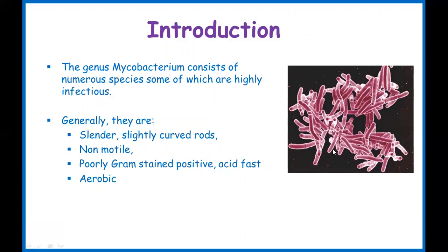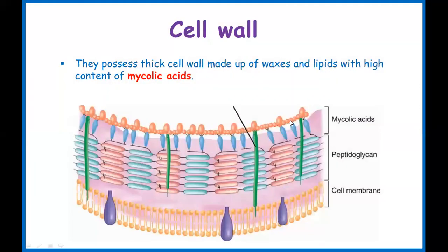Another very important point is that Mycobacterium stain very poorly with Gram stain. Because of this, they are stained using a different kind of stain — one that is not decolorized by acid. That is why they are called acid-fast.